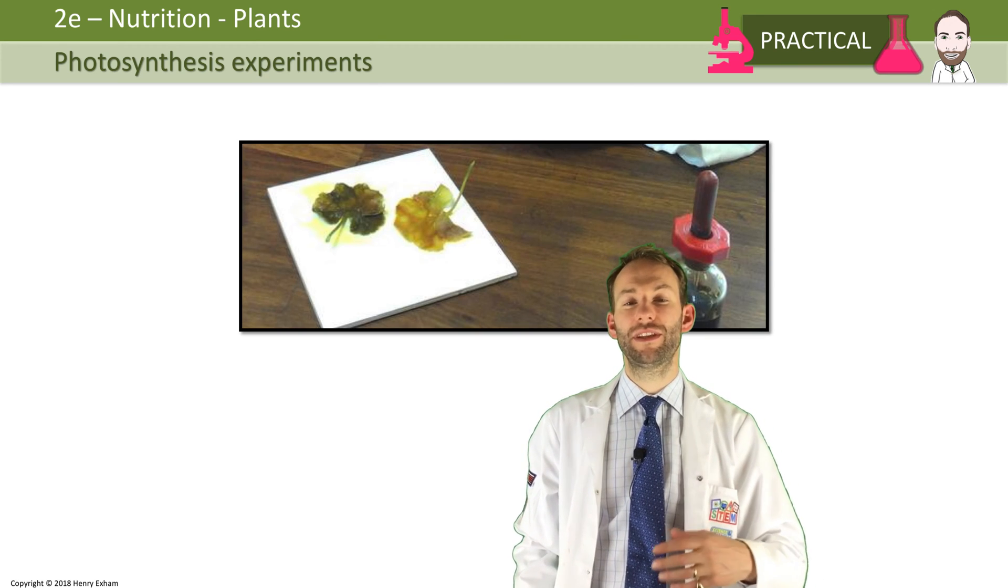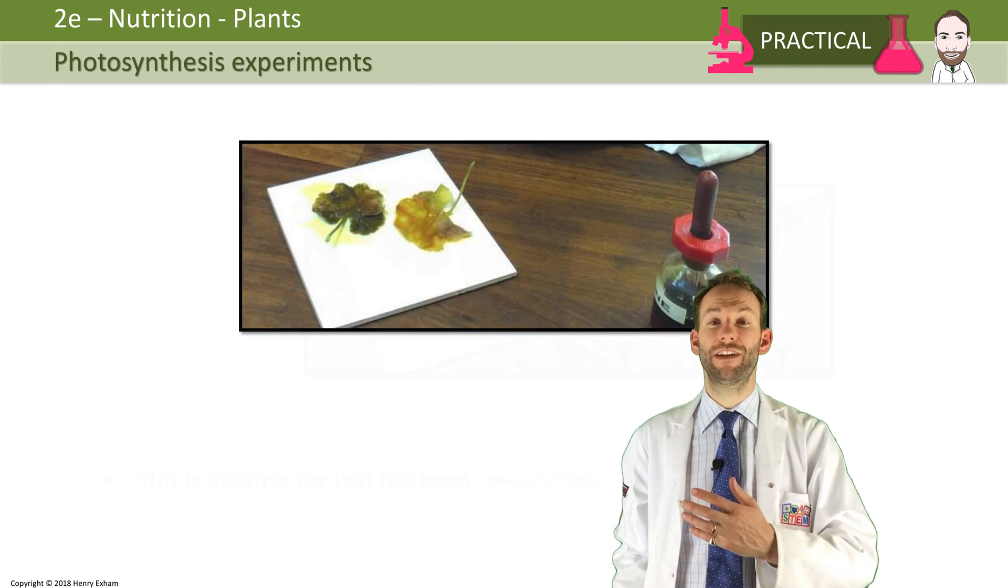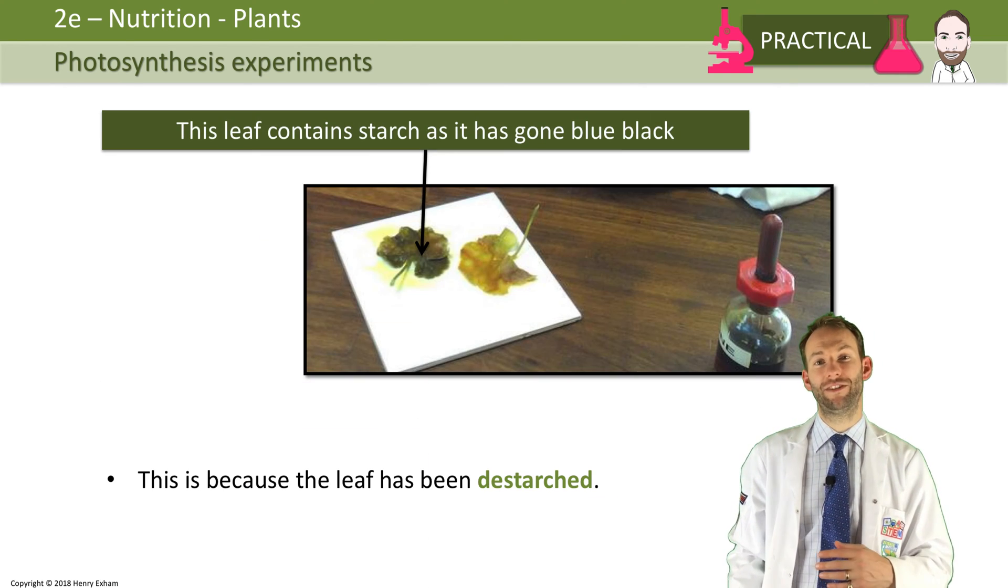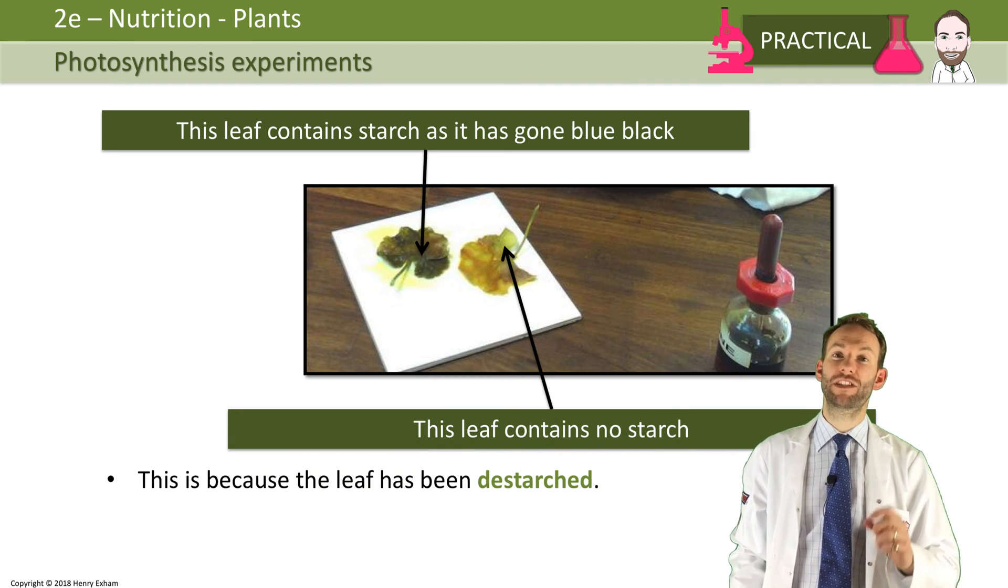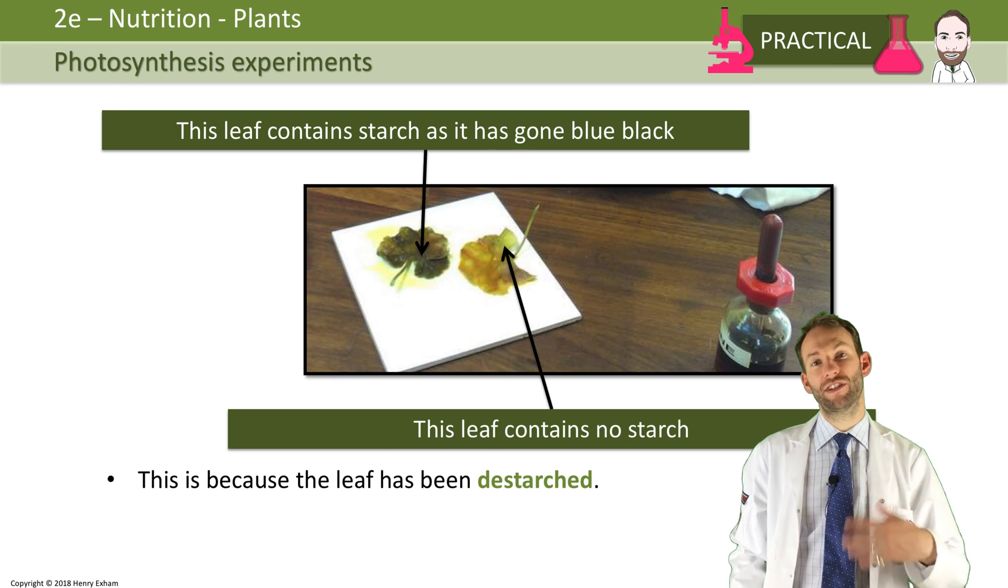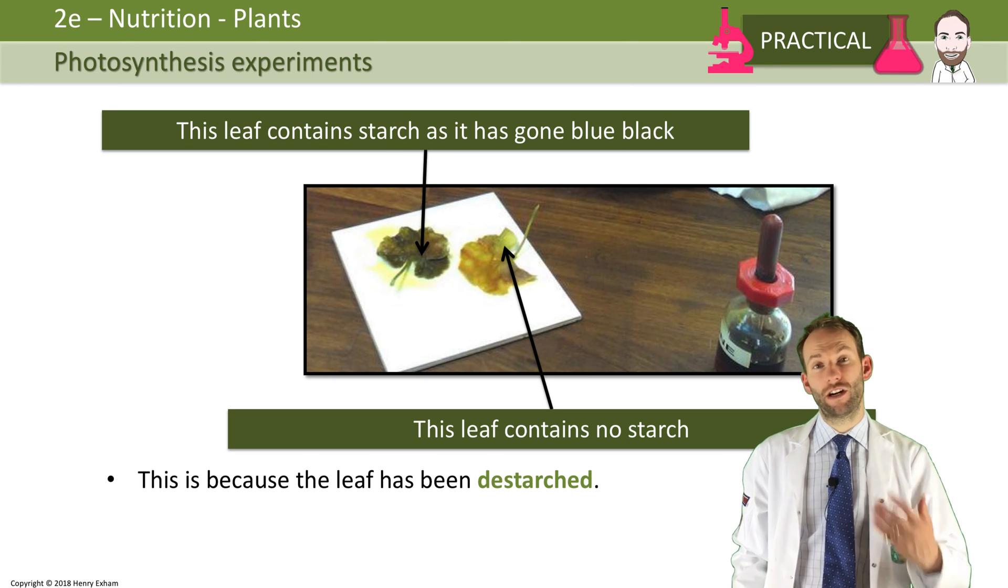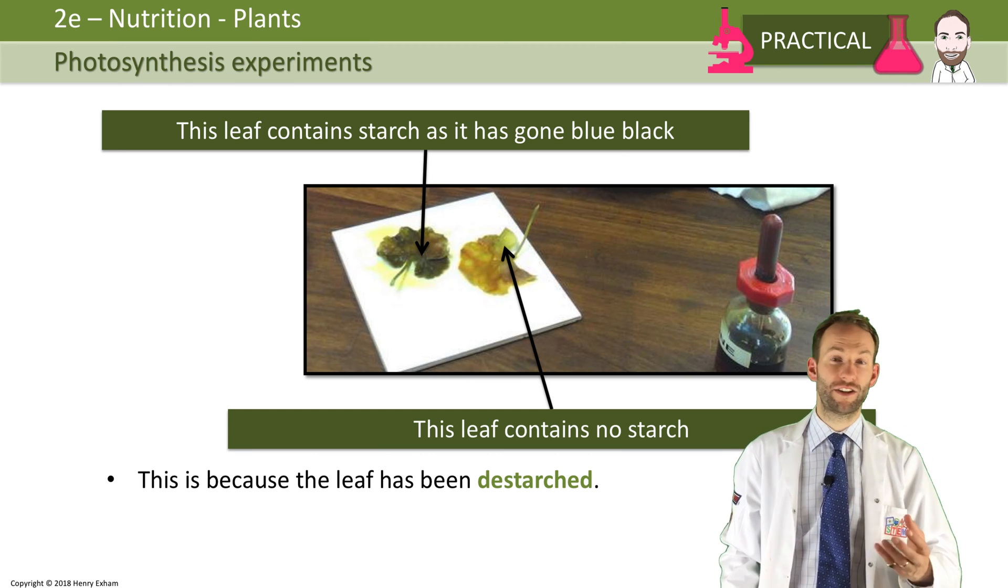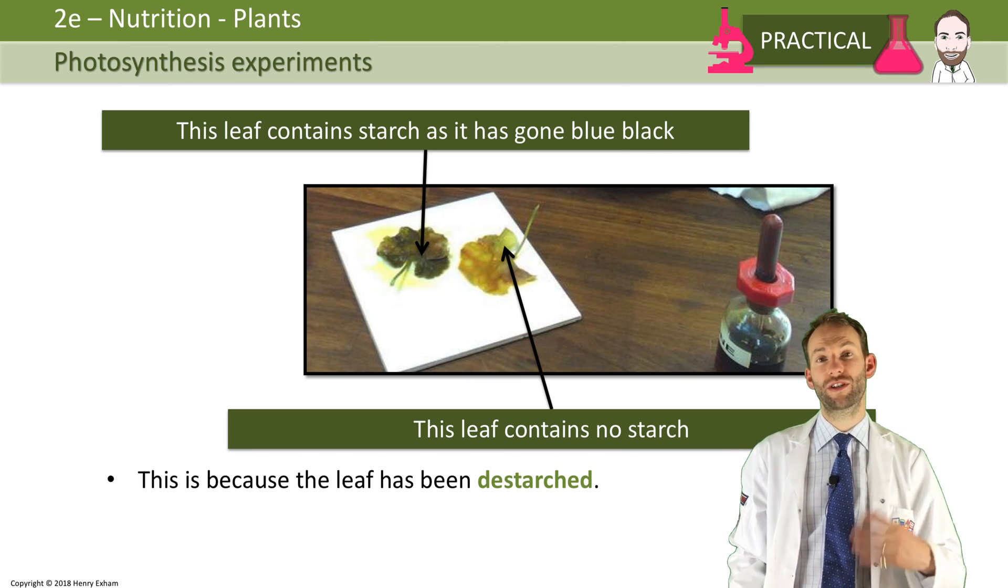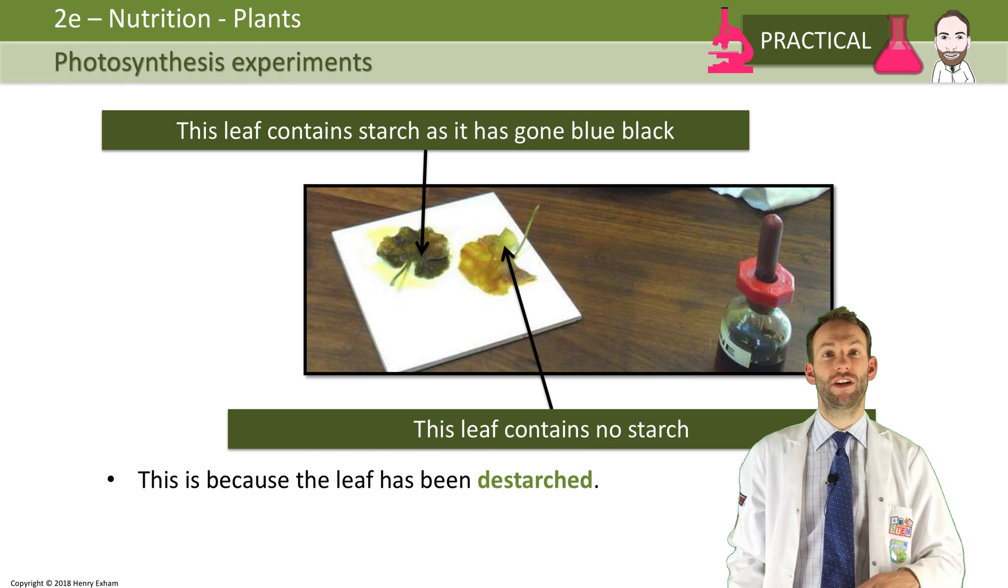You should see, as you can see with these results, that the leaf will go blue black as starch is present. There's another leaf here which hasn't gone blue black - it stayed brown yellow with the iodine. That's because that leaf has been destarched. What that means is that leaf has come from a plant which has been kept in the dark for a few days. If the plant is in the dark it can't photosynthesize. If it can't photosynthesize it needs to get another source of glucose in order to do respiration, and it gets it out of its starch that is stored. So it uses up all its starch reserves.